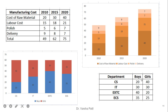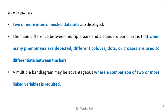In another example, department-wise counts of boys and girls are given. By looking at the raw figures it is difficult, but the visualisation makes it very easy to understand. In CS the girls are more than boys, in IT the numbers are roughly the same, while in EXCC and ECS the boys are more than the girls.